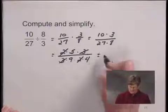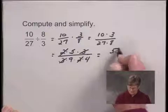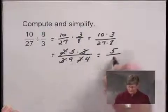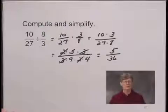Now what I have left is the simplified form of this quotient. In the numerator I have 5, and in the denominator I have 9 times 4, or 36. So this is the simplified form of the quotient.